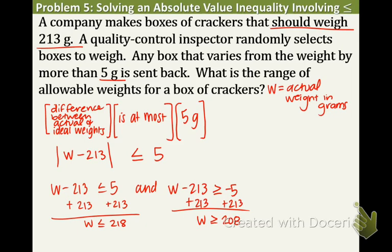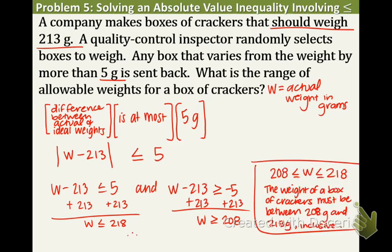So what this is saying is that the weight of a box of crackers must be between 208 and 218 grams inclusive. So I just wrote our conclusion sentence to the right. You can write down that on your note sheet. And if the weight of the box of crackers is not between those two values, including 208 and 218, then the box of crackers will be sent to the factory.